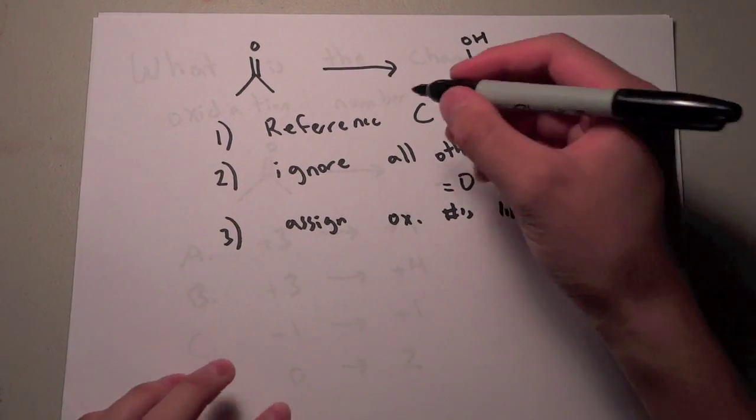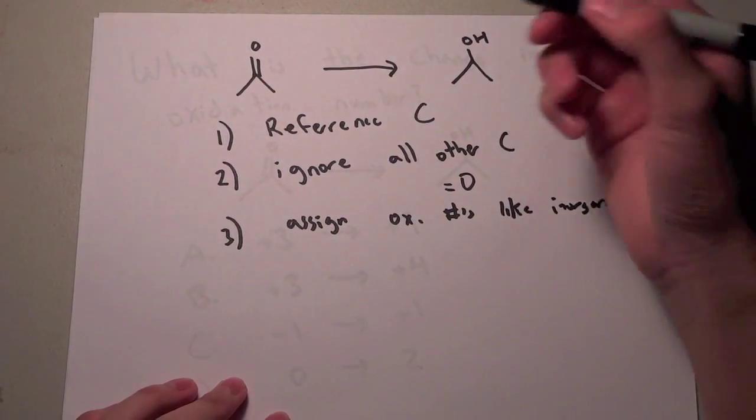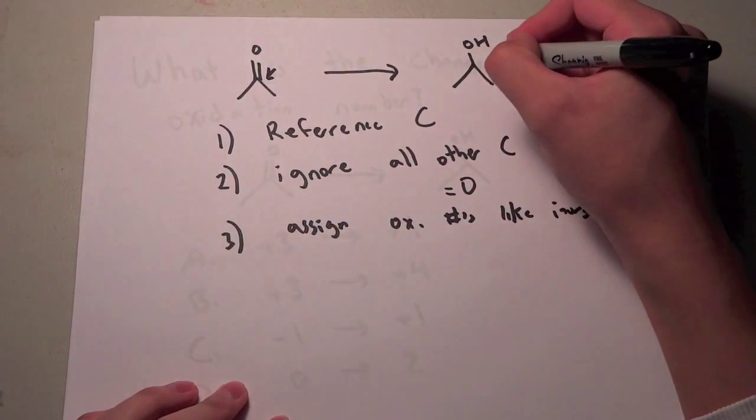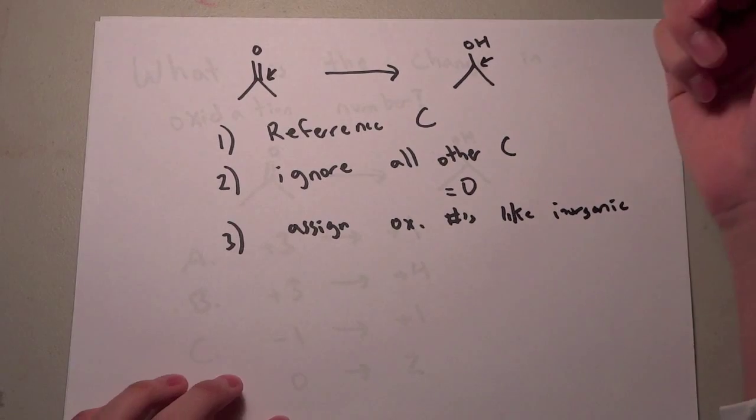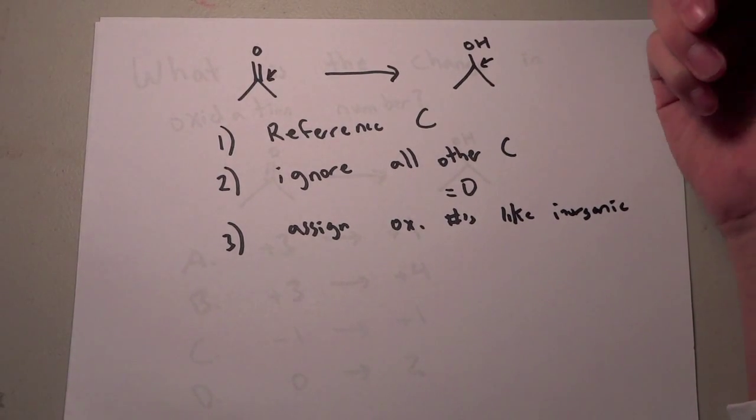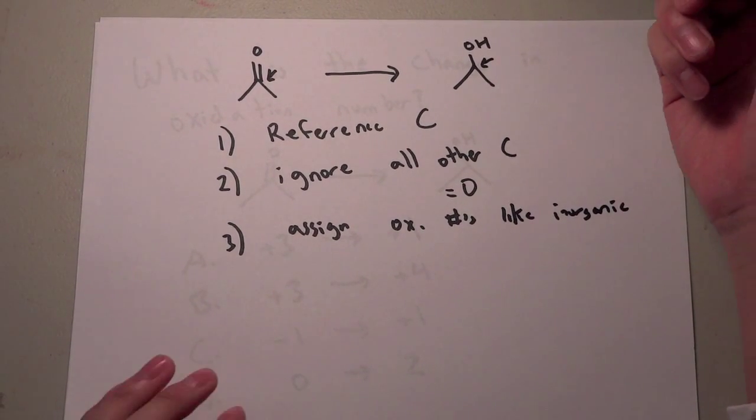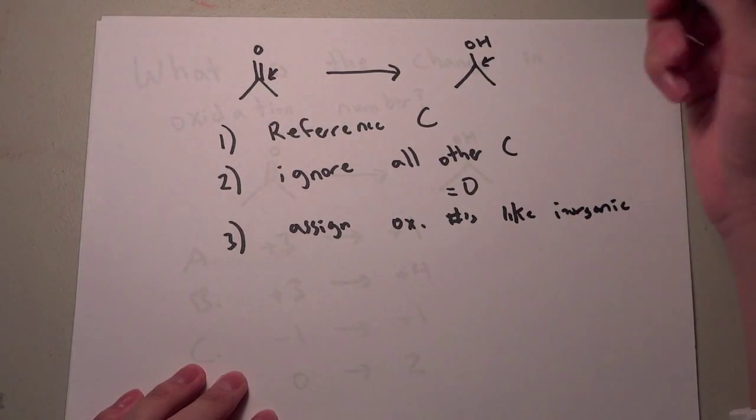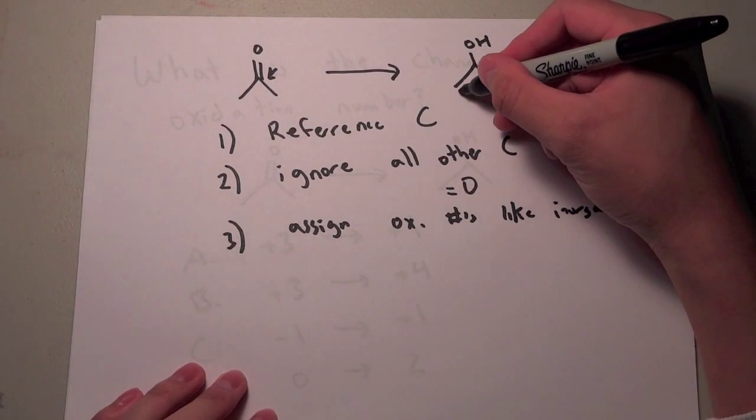So let's try this one out. The first step we want to do is find our reference carbon. So it is going to be this carbon right here. This carbon right here is the one that is actually being oxidized or reduced and we are going to figure out which one it is. So the next step is ignore all the other carbons, the carbons that don't change. This one doesn't change,